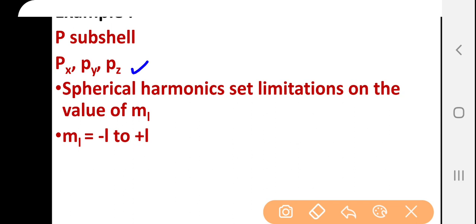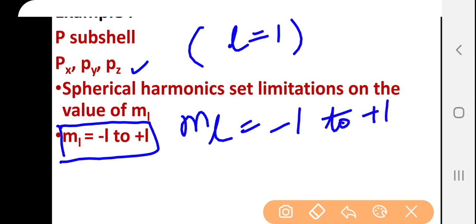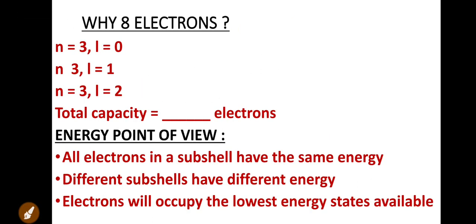Spherical harmonics sets limitations on the values of magnetic quantum number ML as well. The ML values for a sub-shell range from minus L to plus L. So for the P sub-shell where L equals 1, the possible ML values range from minus 1 to plus 1, giving three possible values: minus 1, 0, and plus 1. Now, after understanding quantum numbers and the existence of electrons within shells, sub-shells, and orbitals, we will come to understand why 8 electrons.